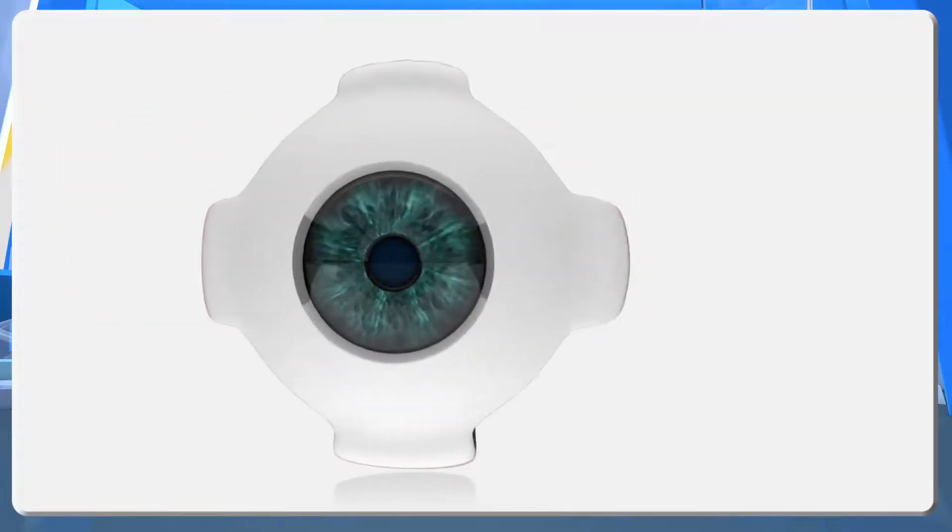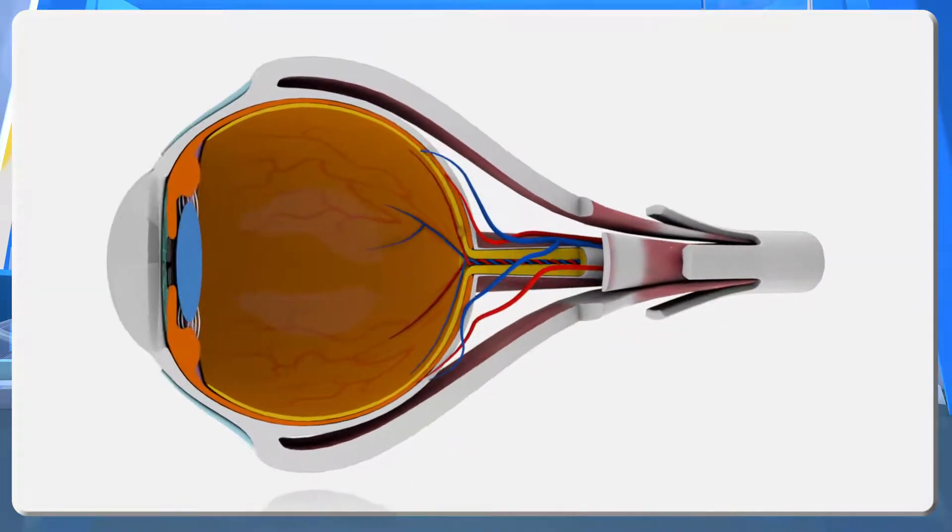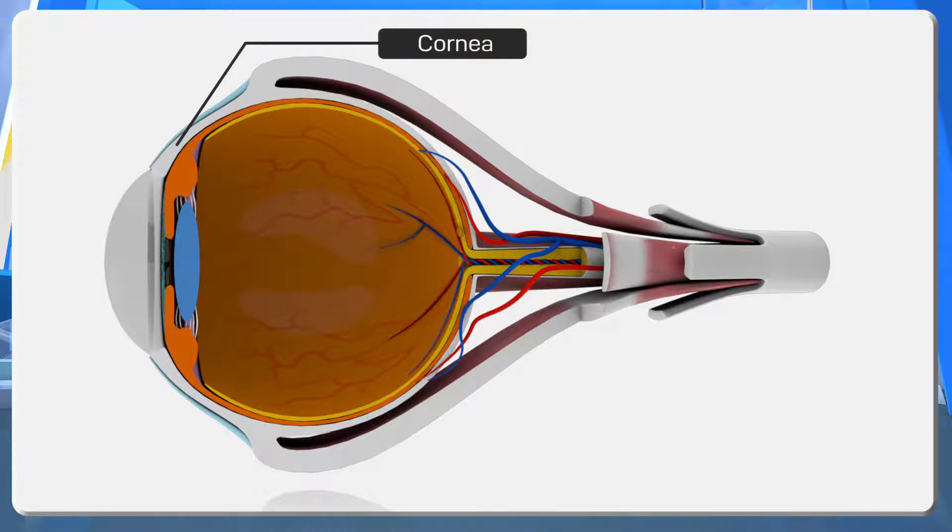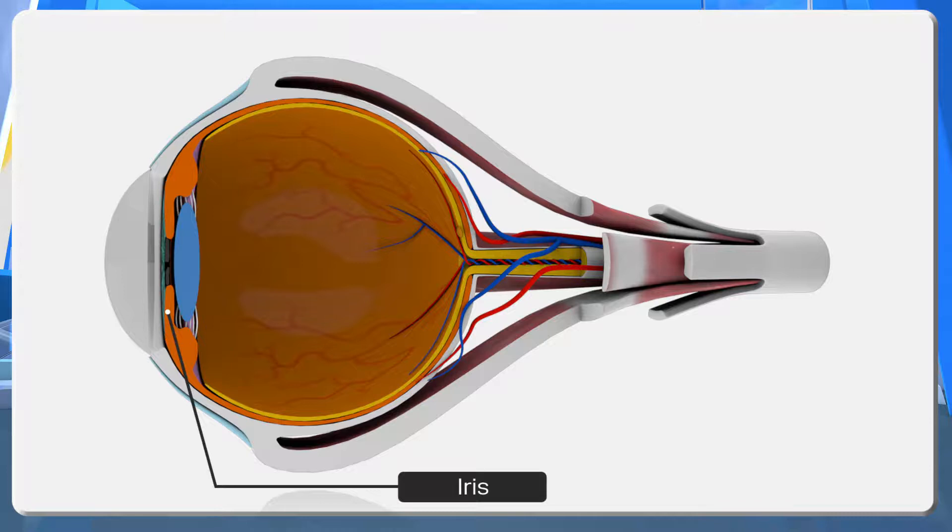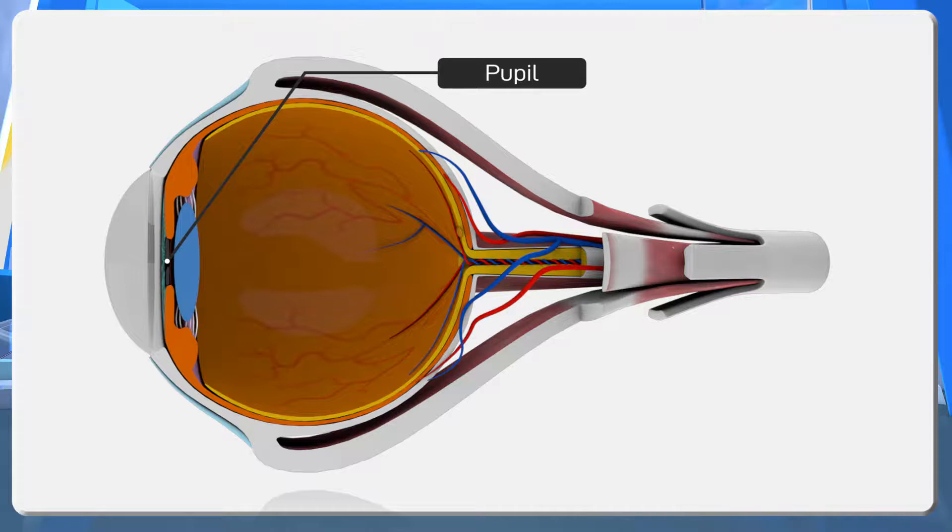The outer layer sclera is again divided into two layers. Cornea: The projected transparent anterior part of the sclera which refracts light rays to focus on the retina. Conjunctiva: The layer which covers and protects the front part of sclera except the cornea. The middle layer choroid is again divided into two layers. Iris: The part of the choroid seen behind the cornea. Presence of pigment melanin gives the iris a dark color. Pupil: The aperture seen at the center of the iris. The size of this aperture increases and decreases depending on the intensity of light.